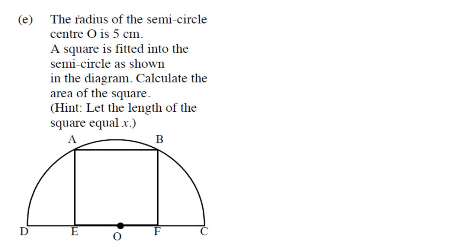Okay, let's try question E. The radius of the semicircle with center O is 5. So from here to here is 5, or from O to A is 5.